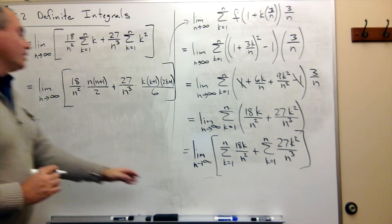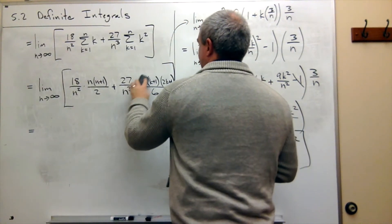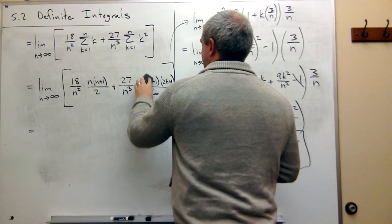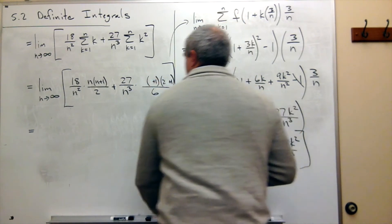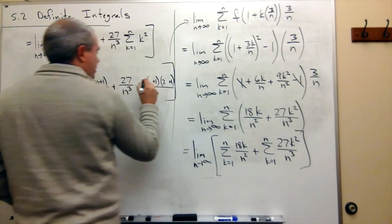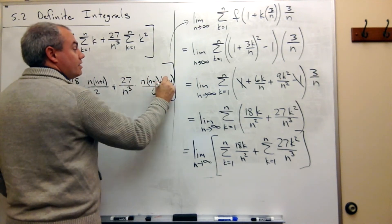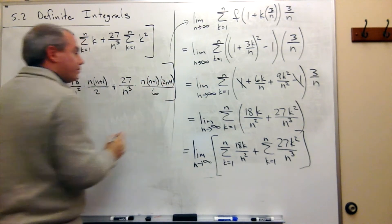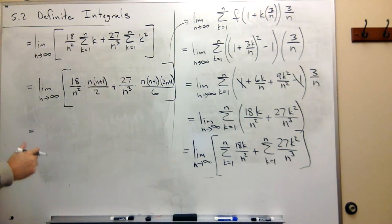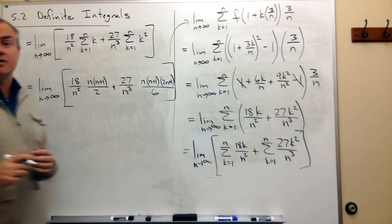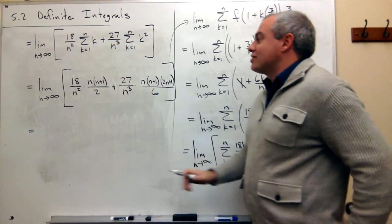Oh, I made a mistake here — I wrote k's in there, that's very bad. These are n's. My apologies. So it's n times n plus 1 times 2n plus 1 over 6. That's much better and actually makes some sort of sense.